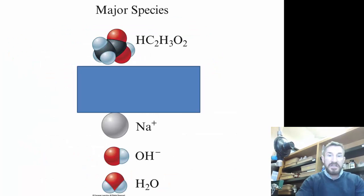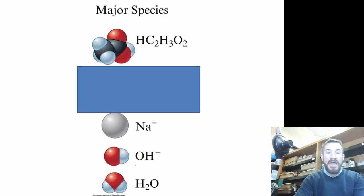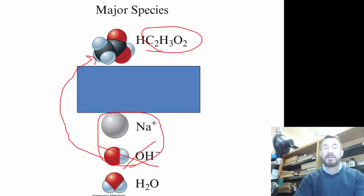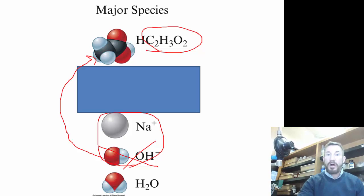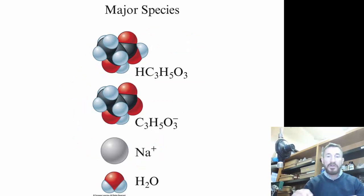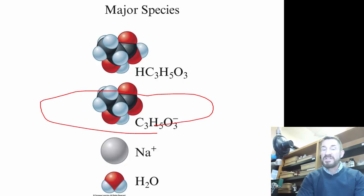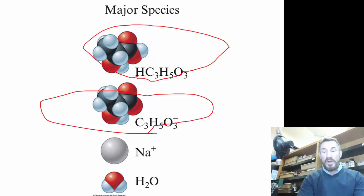These are our major species - acetic acid, and then we add the strong base sodium hydroxide and water. Sodium hydroxide is going to react with acetic acid and form acetate ions. As long as sodium hydroxide is limiting and used up completely, you will end up with a buffer. The major species you end up with - notice how sodium hydroxide disappeared.